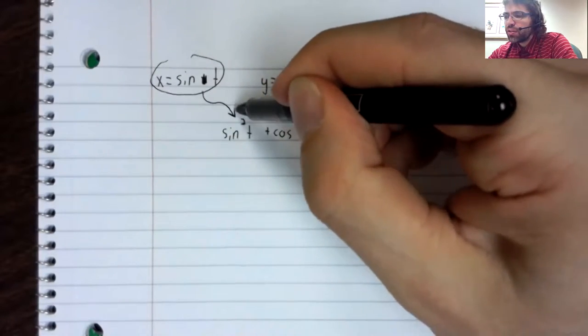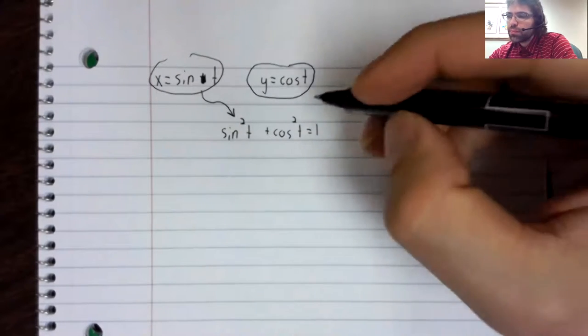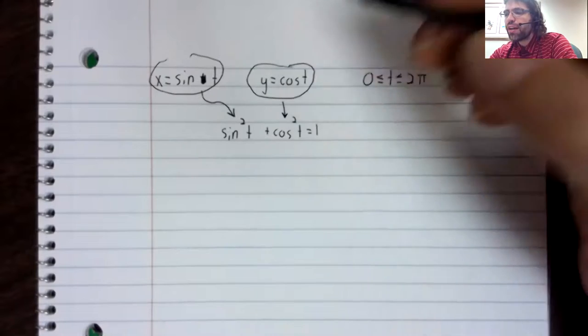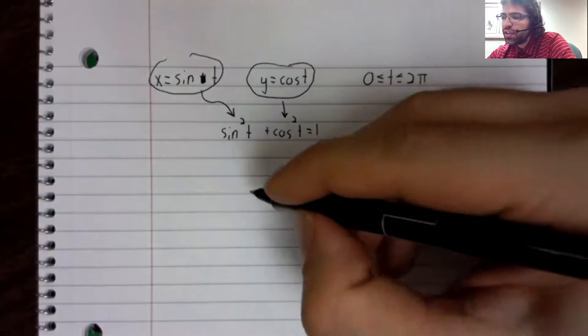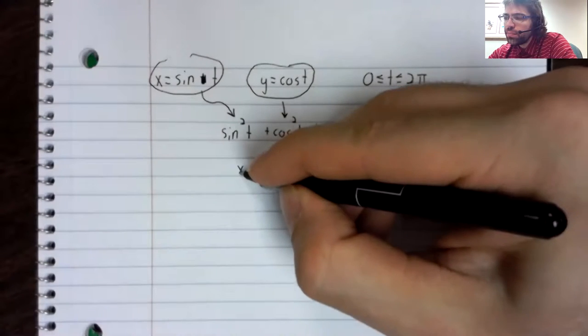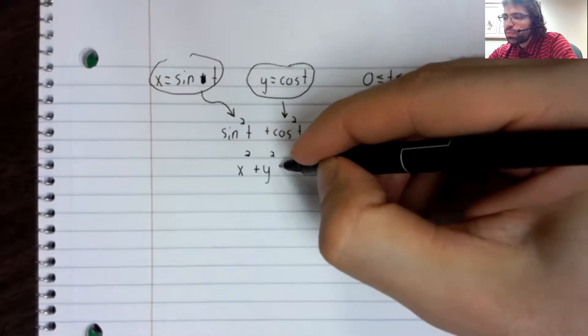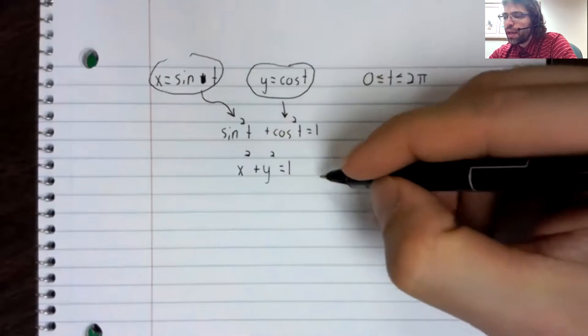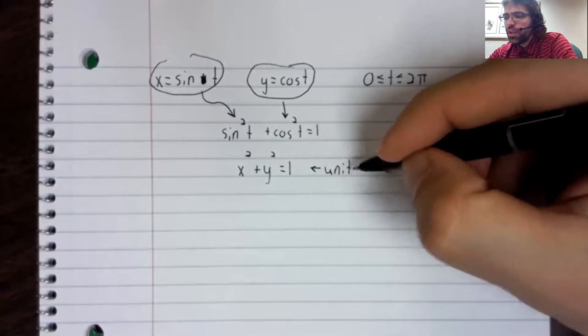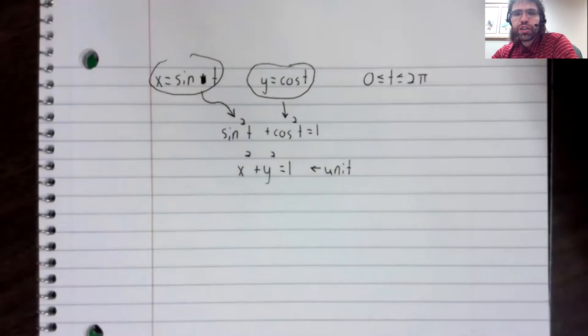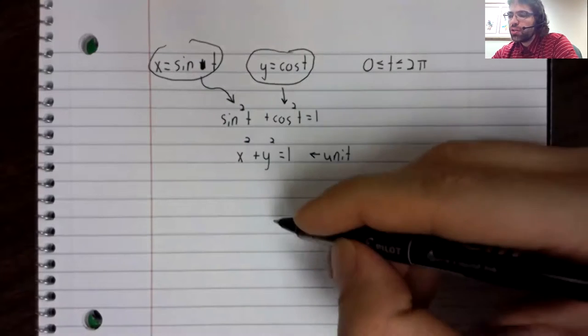The sine is X, and the cosine is Y. So X squared plus Y squared equals one. The curve that this parametric equation gets us is the unit circle.